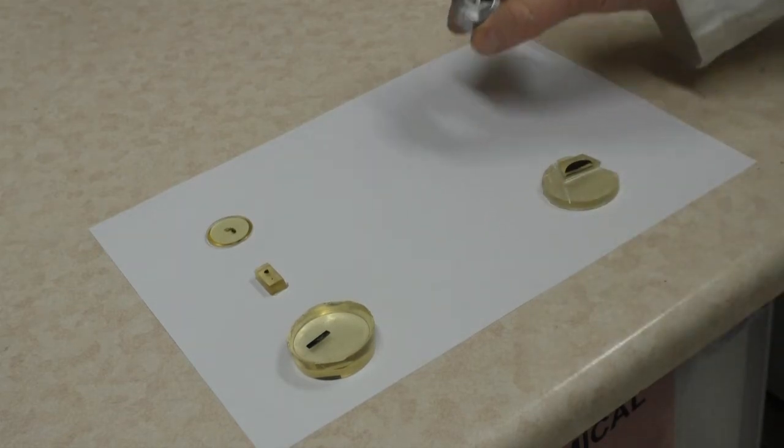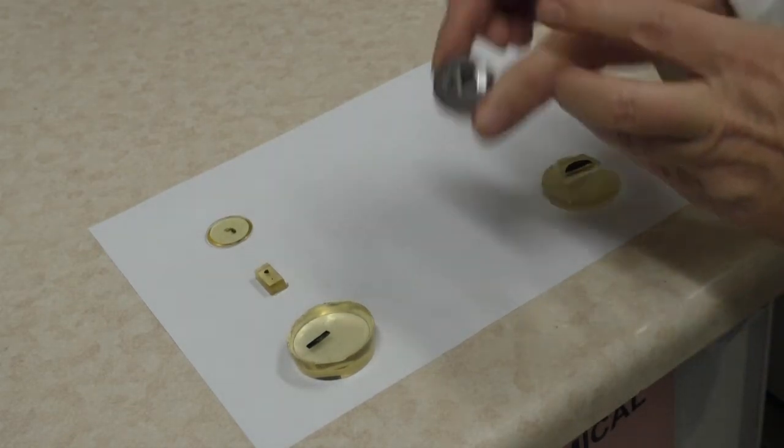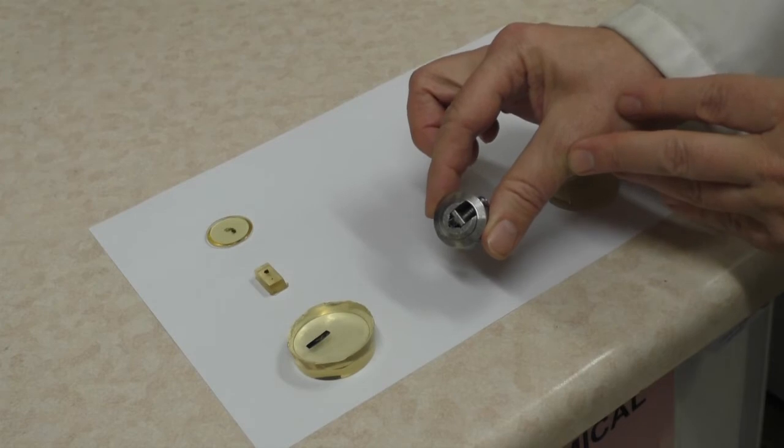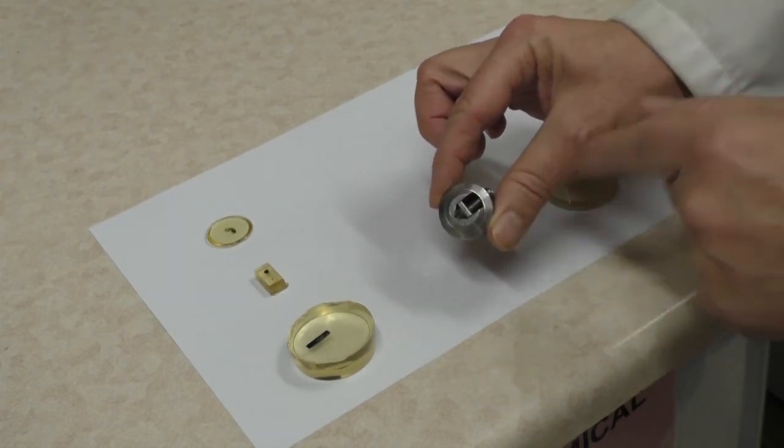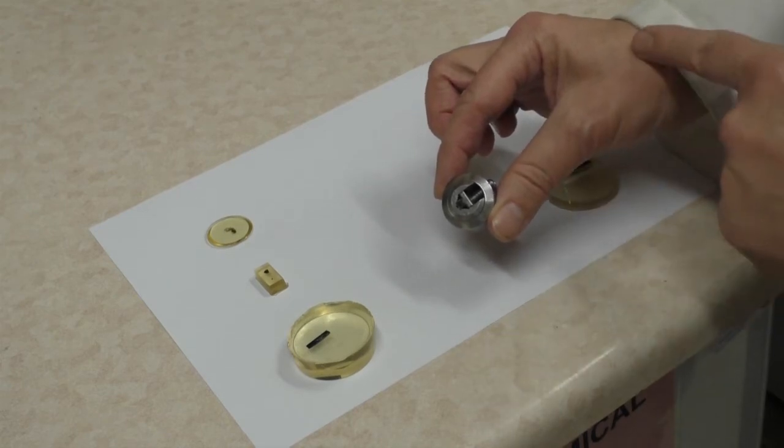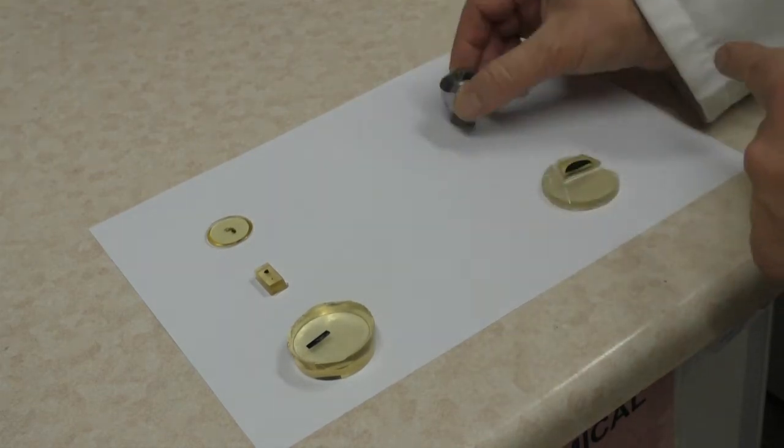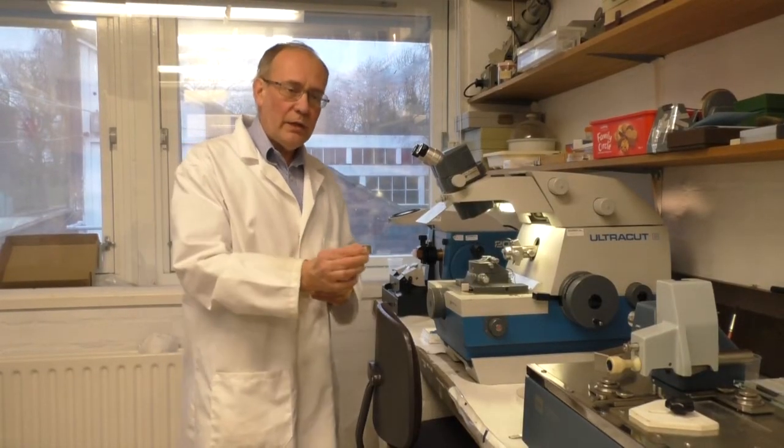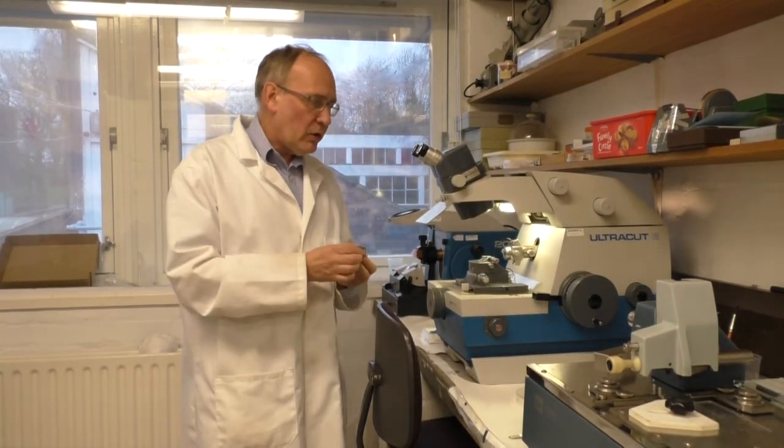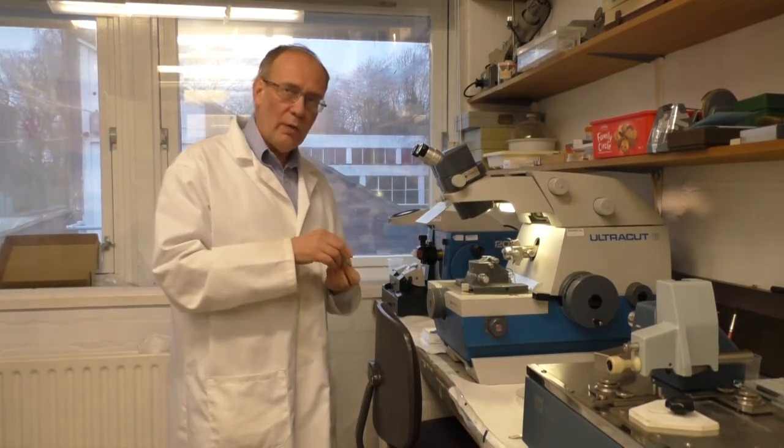This has to be small enough to fit within this chuck. The chuck, as you can see here, contains a very small piece of resin, and the sections that we're going to make will be even smaller than that. So having got our trimmed piece of resin into our chuck, the chuck will now go into the ultramicrotome here.